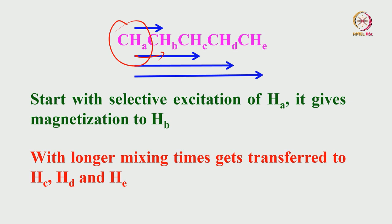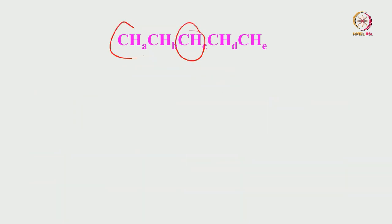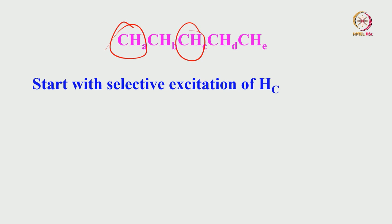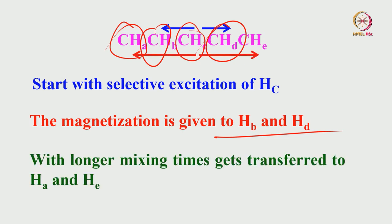If I selectively excite not the proton at the end of the chain but one in the middle — say proton C — then the magnetization is given to B and D, because they are next to each other and coupled. Depending upon the coupling strength, they will be identified. If I increase the mixing time, it will go to A and E as well. You can start with a particular proton, selectively saturate it, and then transfer the magnetization to all the coupled spins of the spin system.